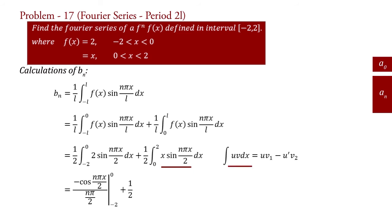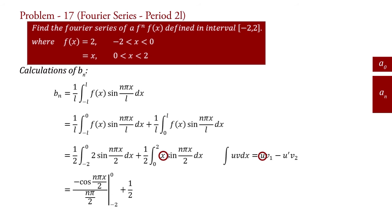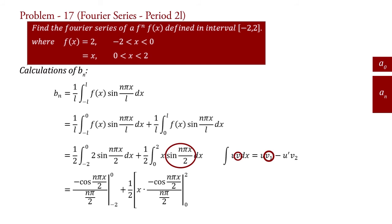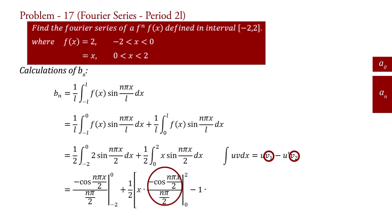If we compare this integral with this formula, then here u equal to x and v equal to sin(n pi x upon 2). So by applying this formula, we write x into v1, that is integration of v and v equal to sin(n pi x upon 2). Therefore we write minus cos(n pi x upon 2) upon (n pi by 2) with limit 0 to 2, minus u-dash, that is differentiation of x which is 1. Therefore we write 1 into v2, that is integration of v1 equal to minus cos(n pi x upon 2) upon (n pi by 2). So we write minus sin(n pi x upon 2) upon (n pi by 2) squared with limit 0 to 2.